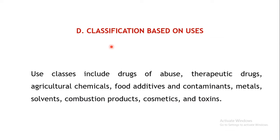The fourth type of classification is based on uses — substances used in day-to-day life to which we get exposed, and excessive exposure may cause toxicity. These include drugs of abuse, therapeutic drugs which may also have toxic effects, agricultural chemicals, food additives, metals, solvents, combustion products, and cosmetics and toxins.